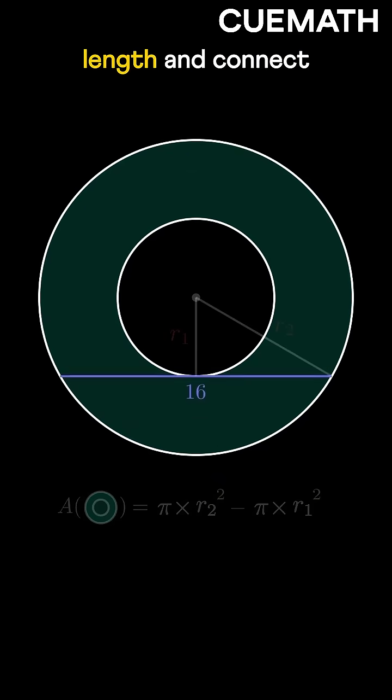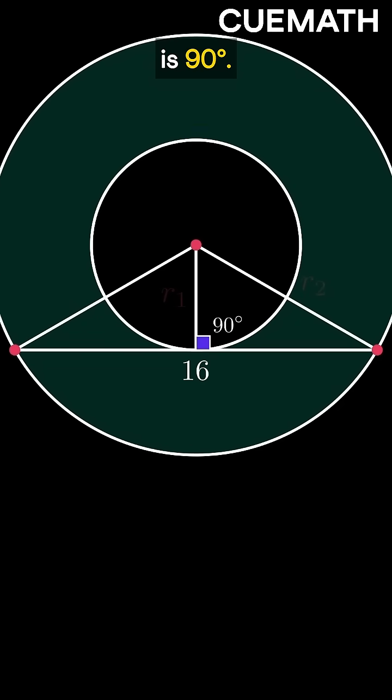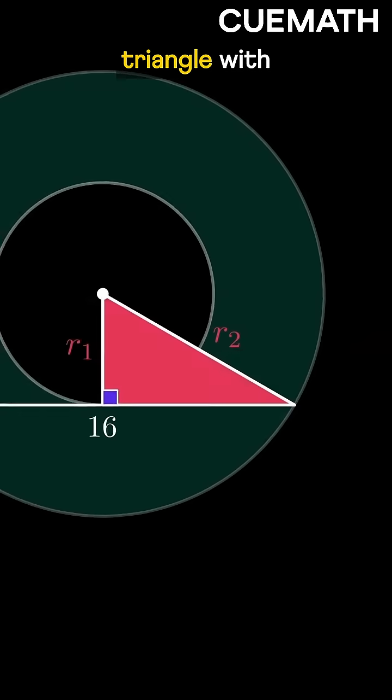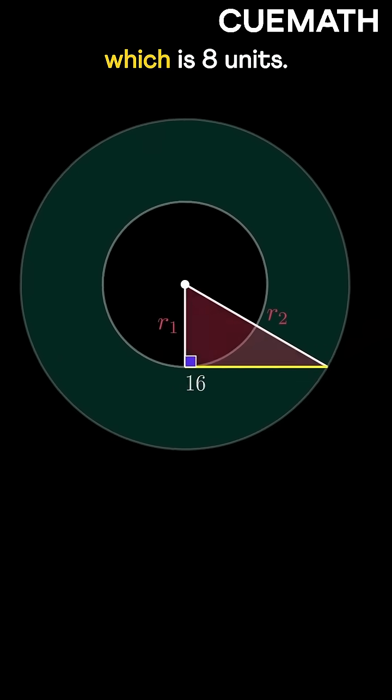Let's make use of this length and connect the ends of the cord to the center. Since the cord is tangent to the inner circle, this angle is 90 degrees. This forms a right triangle with sides R1, R2, and half the cord, which is 8 units.